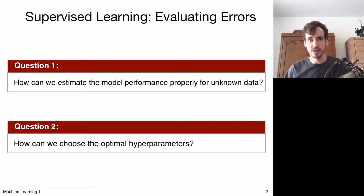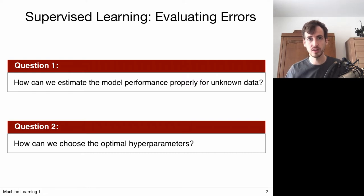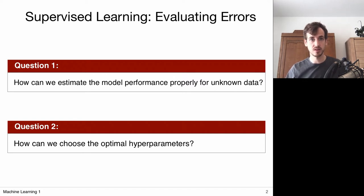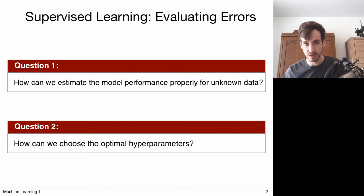When you're doing supervised learning you evaluate errors mainly for two reasons. You want to know how well your model performs, in particular on unseen data, because that gives you an impression of how well the model generalizes. But you're also evaluating errors to choose your hyperparameters — for example, the optimal alpha in the maximum a posteriori case, or equivalently lambda in regularized linear regression.